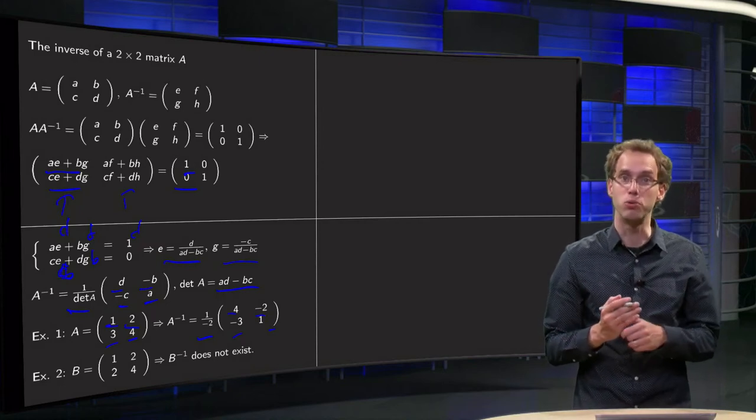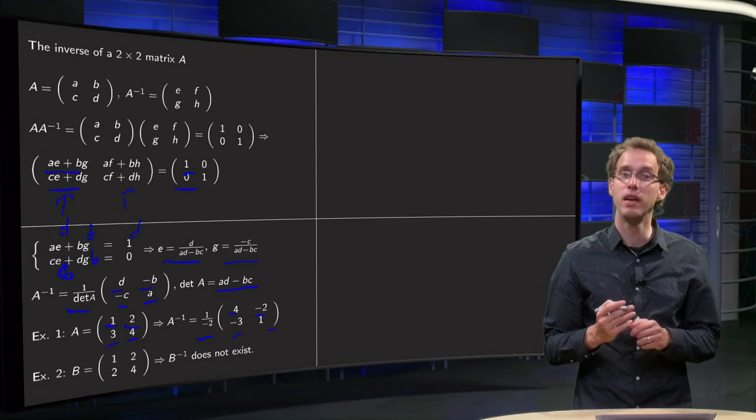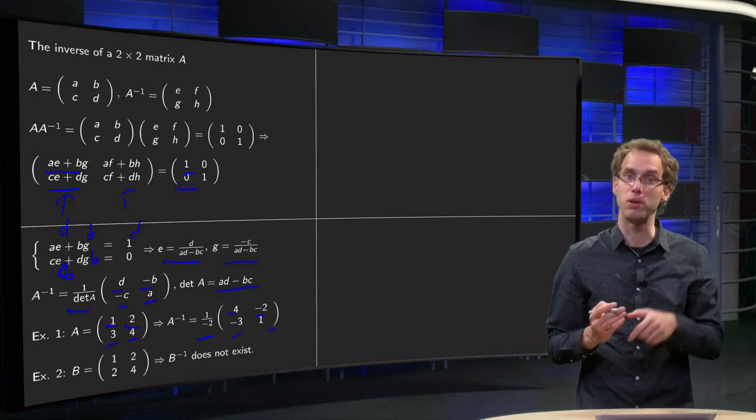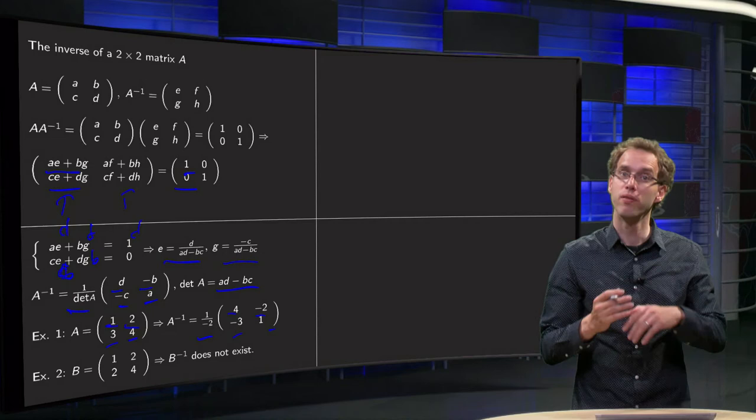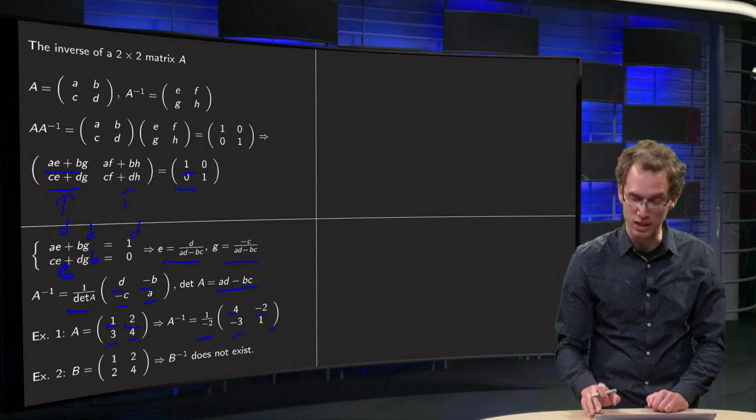If you have the matrix B = [[1, 2], [2, 4]], which is almost the same, the determinant equals 1 times 4 minus 2 times 2, 4 minus 4 equals 0, which means that the inverse does not exist.